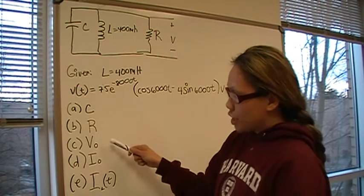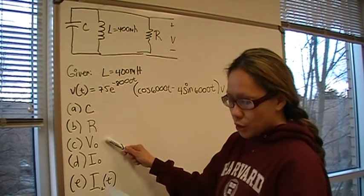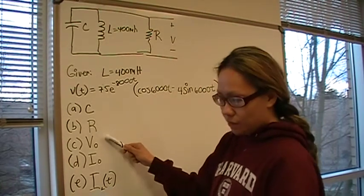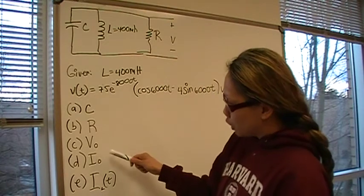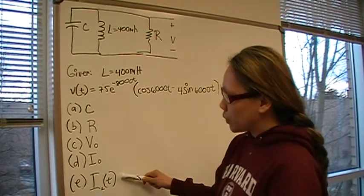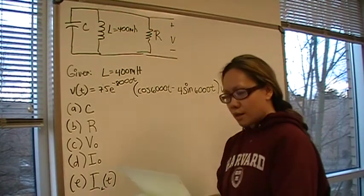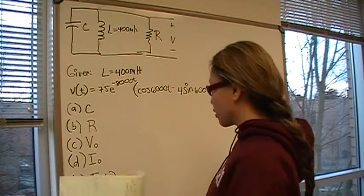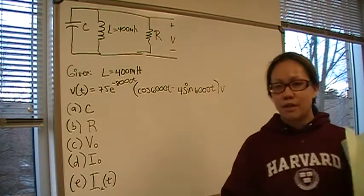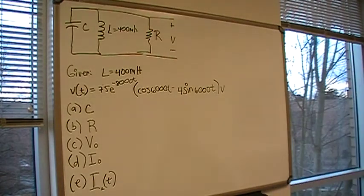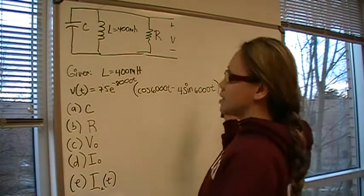We're asked to find capacitance, resistance, initial voltage on the circuit, initial current through the inductor, and a general equation for the current through the inductor. That is the problem that we're trying to solve.